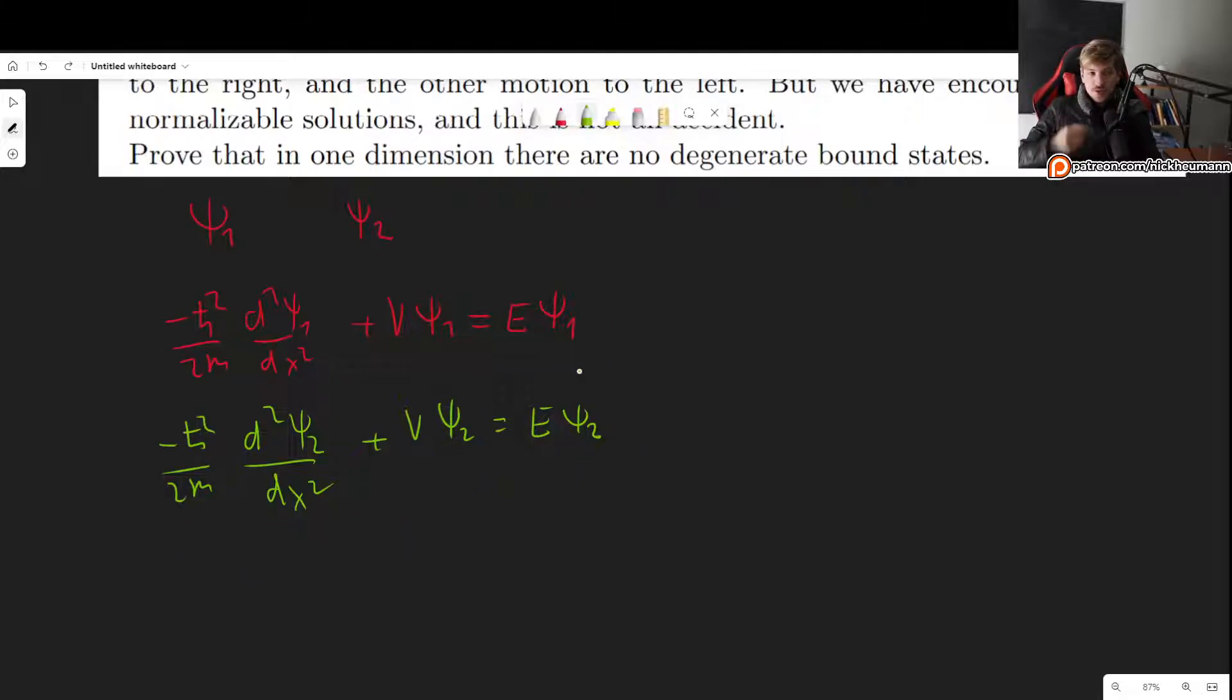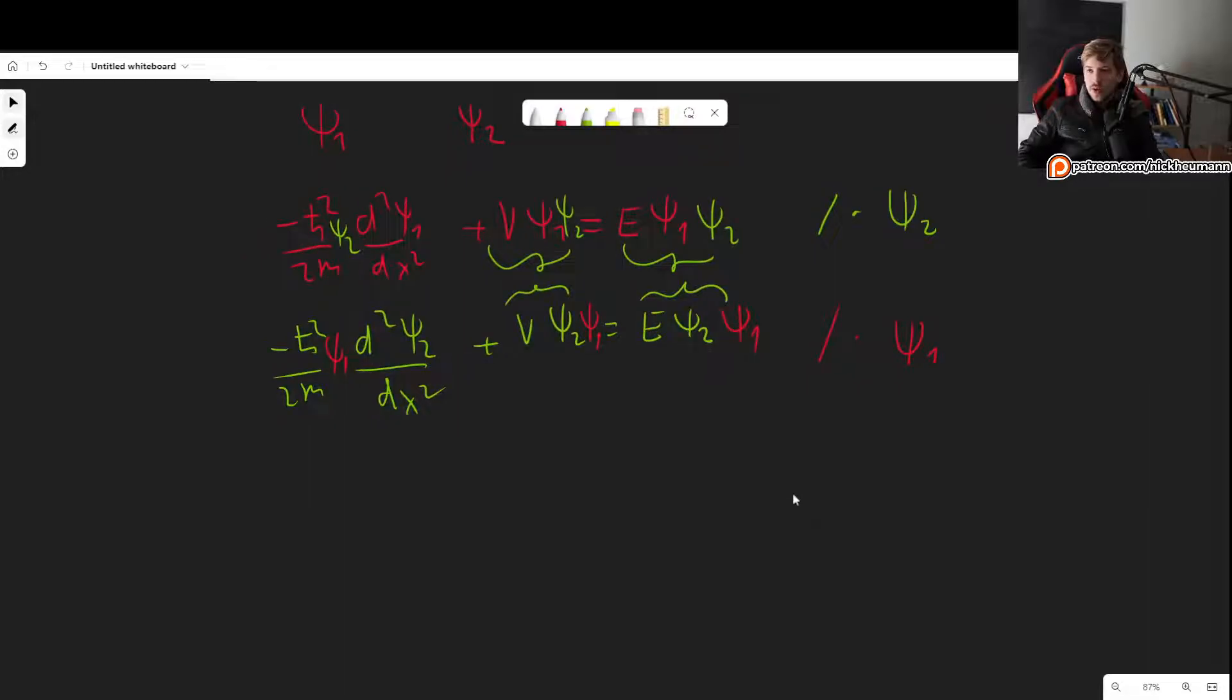So how can we now check what's going on? Well, we can multiply the first equation by ψ₂, and the second equation by ψ₁. This is a very common trick that you will see as you go into higher level theoretical physics. So now notice that this is the same as this, this is the same as this.